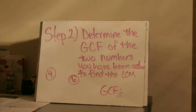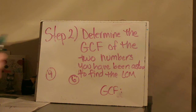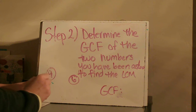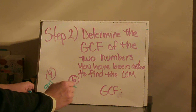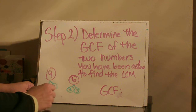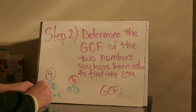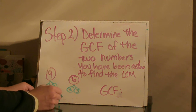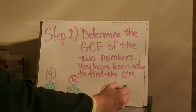Step two: determine the greatest common factor of the two numbers you've been asked to find the least common multiple for. Our numbers were 9 and 6, so I'm going to use my factor tree to find the greatest common factor. 9 is 3 times 3, and 6 is 2 times 3. I want to line up my numbers so that I can determine which prime factor appears in both numbers, and it is 3. So the greatest common factor here is 3.